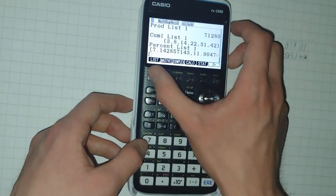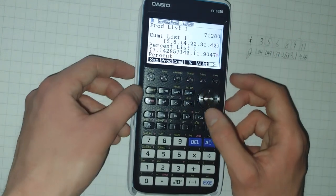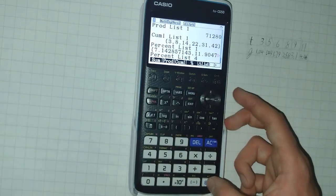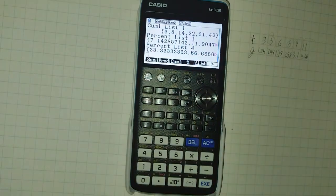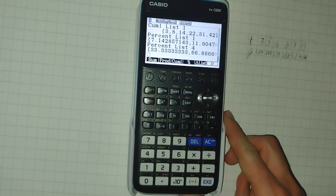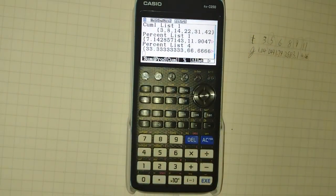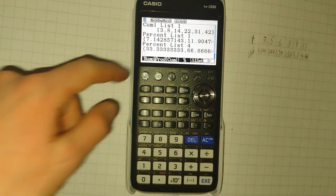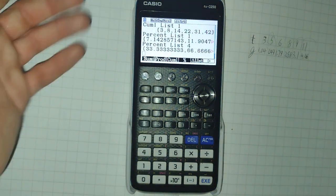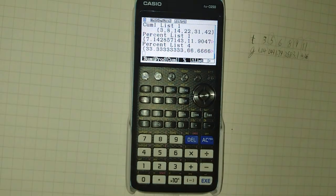Returning and running percent of list four returns thirty-three point three recurring percent and sixty-six point six recurring percent. Because our list contains one and two. And one is a third of the total. And two is two-thirds of the total.